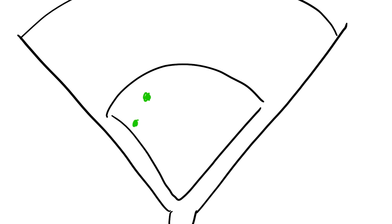So as I sketch out here, I'll make a crude baseball field for you. Here's our infield, here's our outfield. We put our infielders in their standard spots — here's our shortstop, third baseman, second baseman, first baseman, pitcher — and our outfielders are in their standard spots.